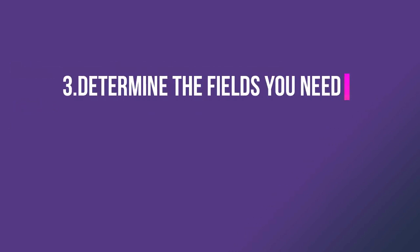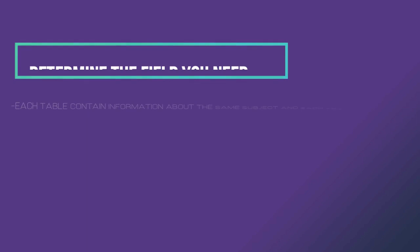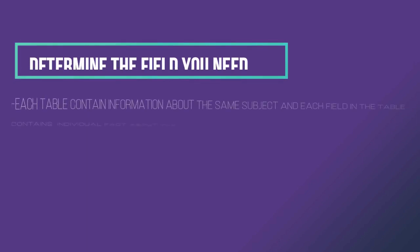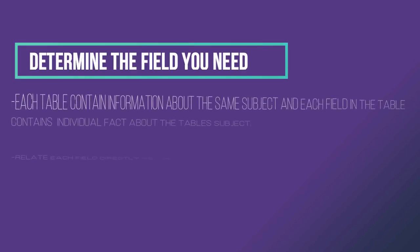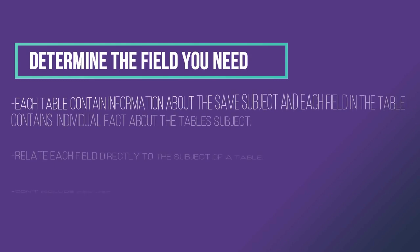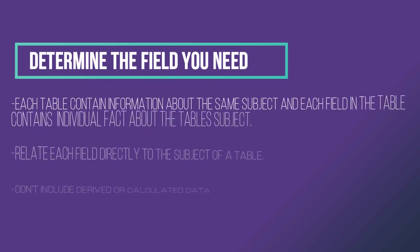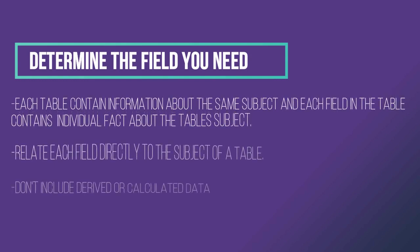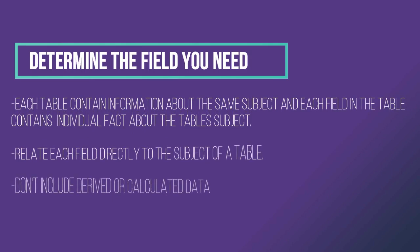The third step: determine the fields you need. Each table contains information about the same subject, and each field in a table contains individual facts about the table's subject. For example, a customer table may include company name, address, city, state, and phone number fields. You need to identify and include all the fields that contain the relevant data.